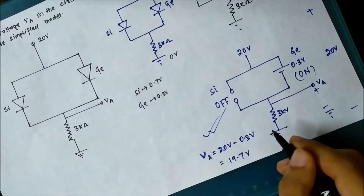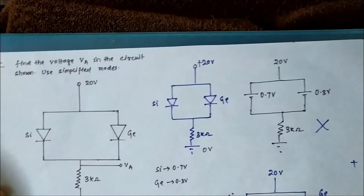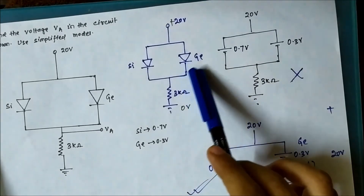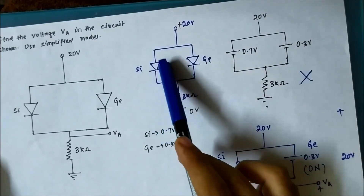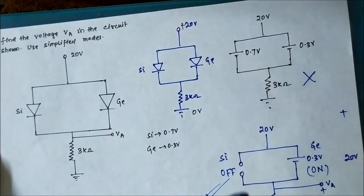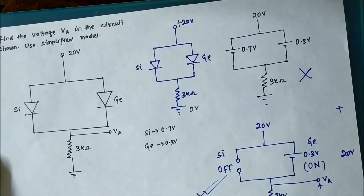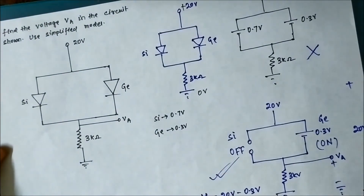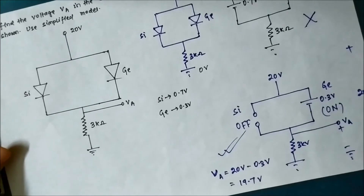So the voltage Va is 19.7 volt. The key concept is: whenever two diodes with different cut-in voltages are present in a parallel circuit, the one with the lower cut-in voltage turns on and prevents the other from turning on. The other diode with the higher cut-in voltage remains off and reverse biased. Here, germanium at 0.3 volt turns on, silicon at 0.7 volt stays off, and Va = 20 minus 0.3 = 19.7 volt.